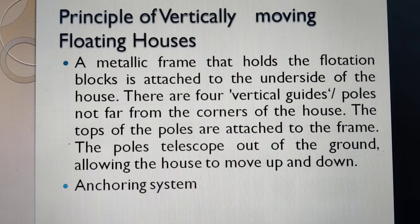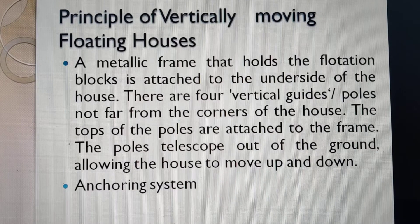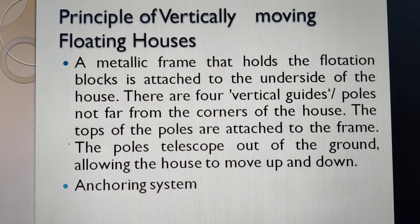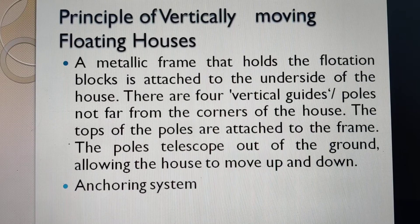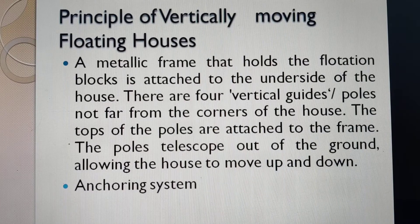There is also a principle of vertically moving floating houses, where the house goes up and comes down as per the water level. A metallic frame holds the flotation blocks and is attached to the underside of the house. There are four vertical guides or poles near the corners of the house, so the whole house moves up and down inside these guides. The tops of the poles are attached to the frame, and the poles telescope out of the ground allowing the house to move up and down.